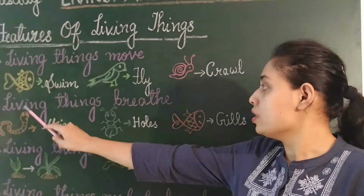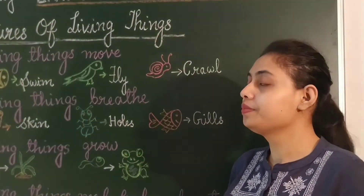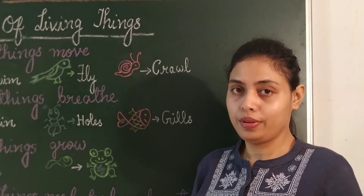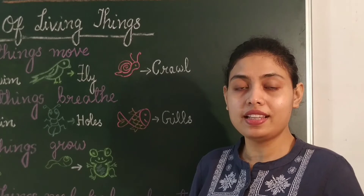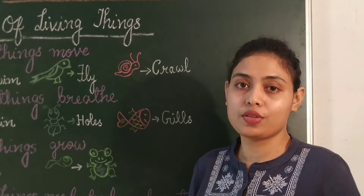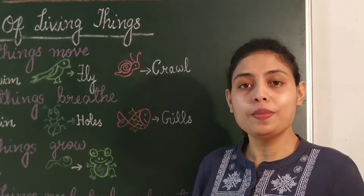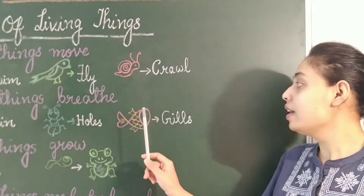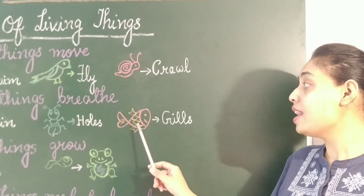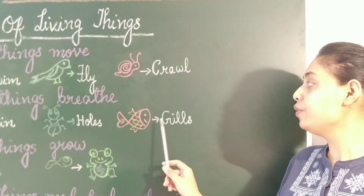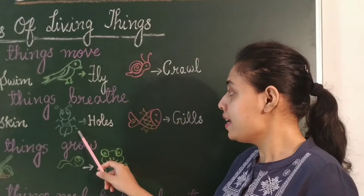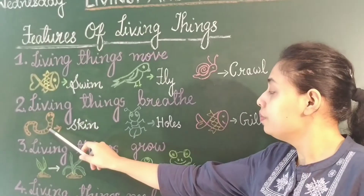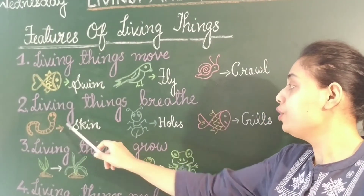Second feature: living things breathe. Taking in oxygen and releasing carbon dioxide is called breathing. Humans and animals breathe through the nose. Aquatic animals like fish breathe through gills. Insects like ants have tiny holes in the body. Earthworms breathe through the skin.